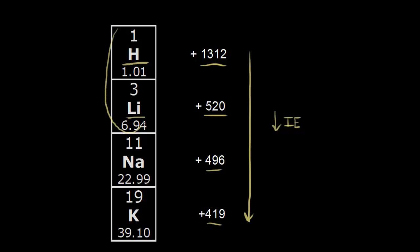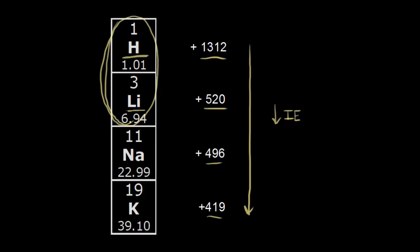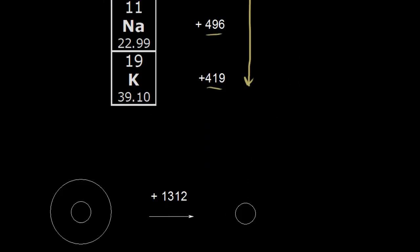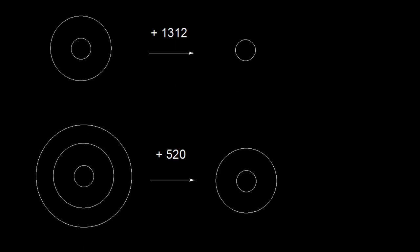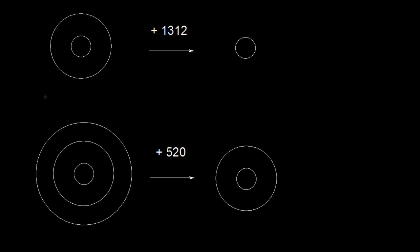Let's figure out the reason why, and we'll study hydrogen and lithium in detail. For our first diagram, we'll put hydrogen. Hydrogen has an atomic number of one, so there's one proton in the nucleus — plus one charge — and in a neutral atom, one electron. I'll draw hydrogen's one electron here. The electron configuration is 1s1, so that one electron is in an s orbital in the first energy level.